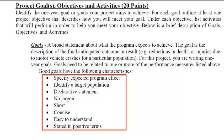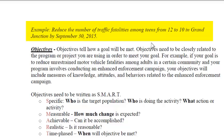Let's look at an example that they have: Reduce the number of traffic fatalities among teens from 12 to 10 in Grand Junction from September 30, 2015. You can see here that this must clearly be related to a couple of performance measures — just an overall reduction of traffic fatalities would help CDOT achieve its state level goals, and then this is specifically mentioning a target population of teens, which might also relate to the young driver measure.